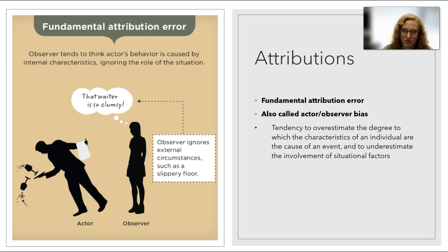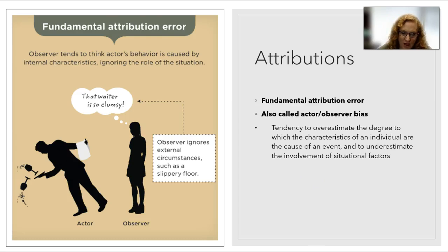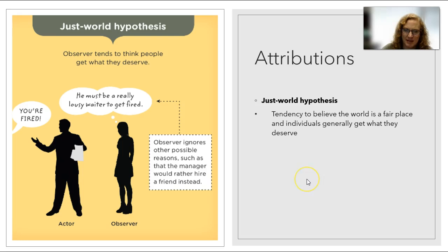On the other hand, when we ourselves do something wrong, we tend to say it was situational — 'I failed the test not because I didn't study, but because my teacher didn't tell me what was going to be on it.' The second attribution error is called the just world hypothesis. This is where the observer tends to think that people get what they deserve.